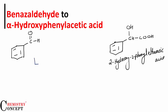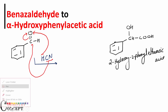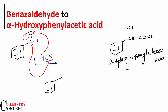This is a very simple conversion — benzaldehyde is reacted with HCN. When an aldehyde reacts with HCN, hydrogen attaches to the oxygen (the double bond becomes a single bond) and cyanide attaches to the carbon. The result is that a cyanohydrin is formed: C-OH, H, CN.